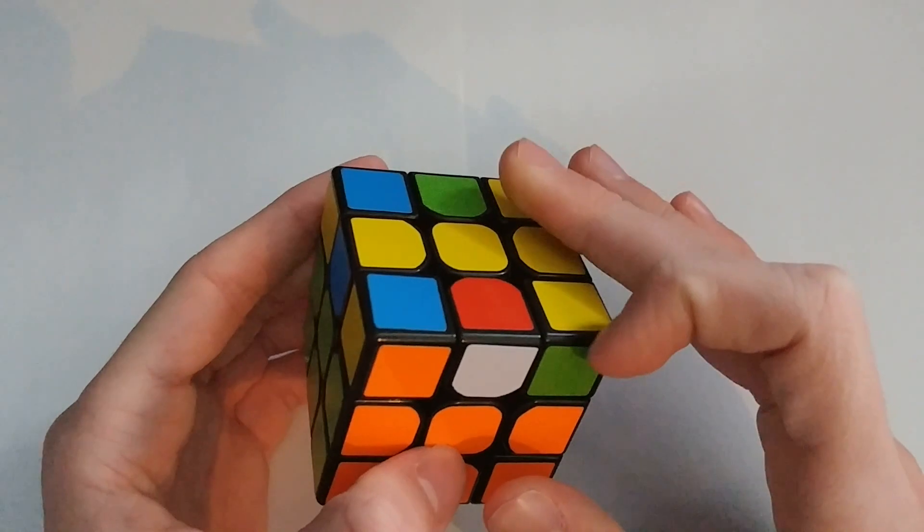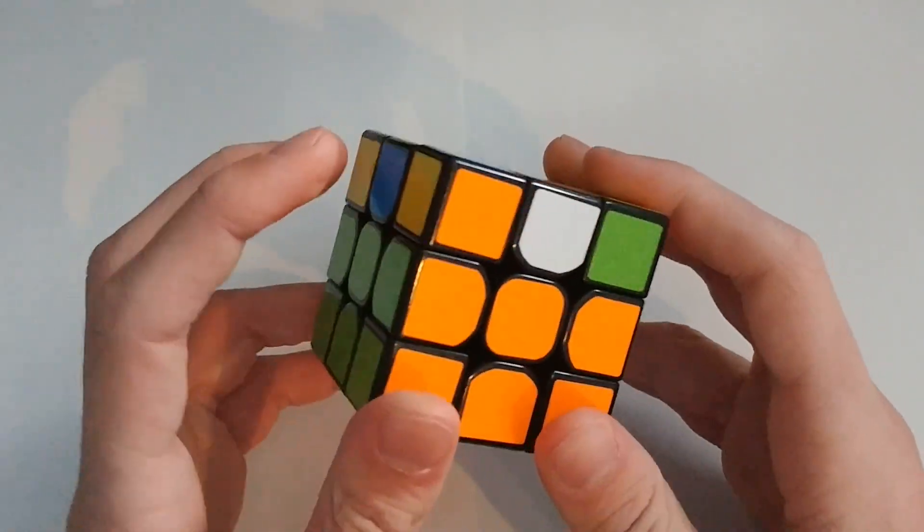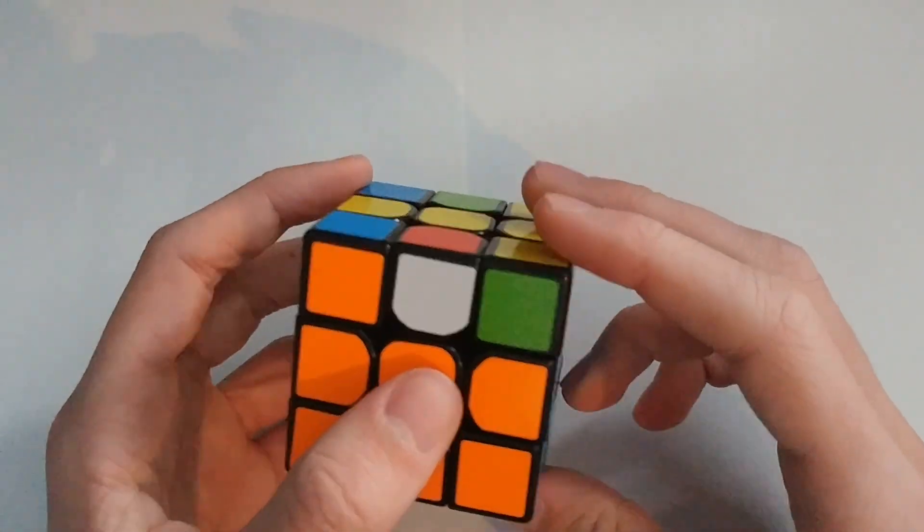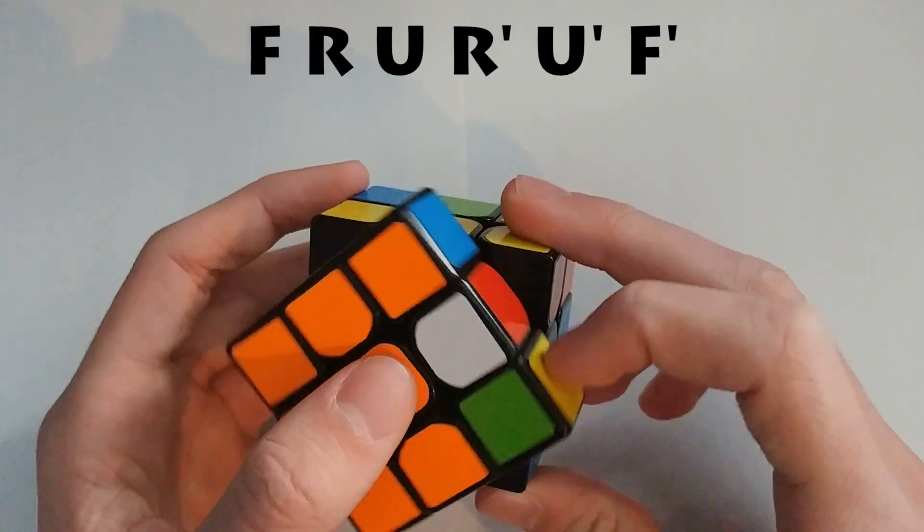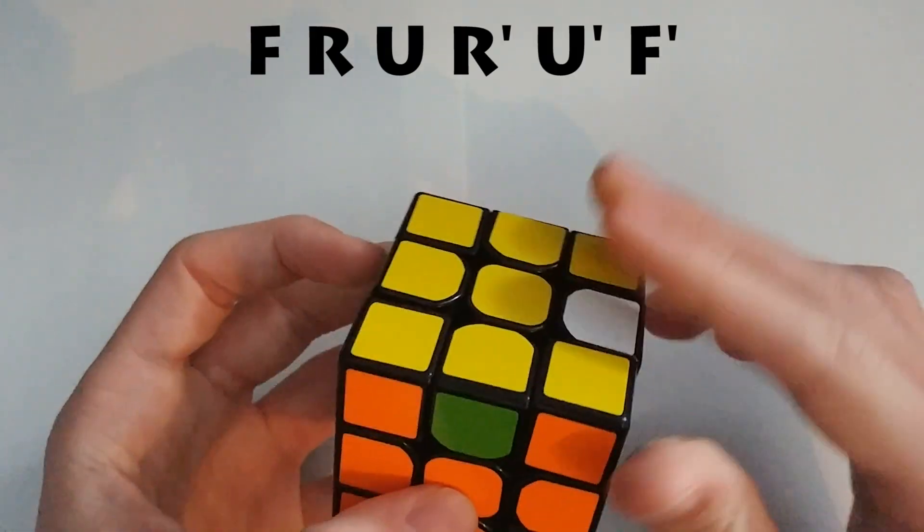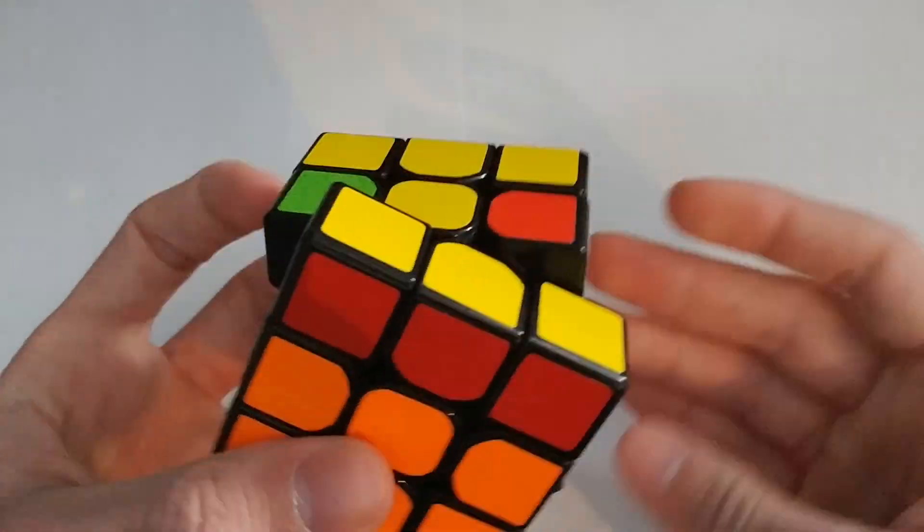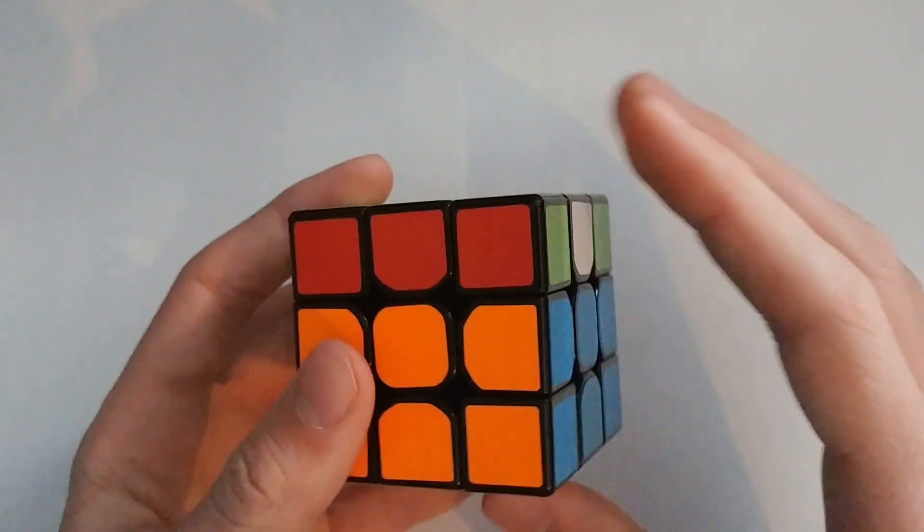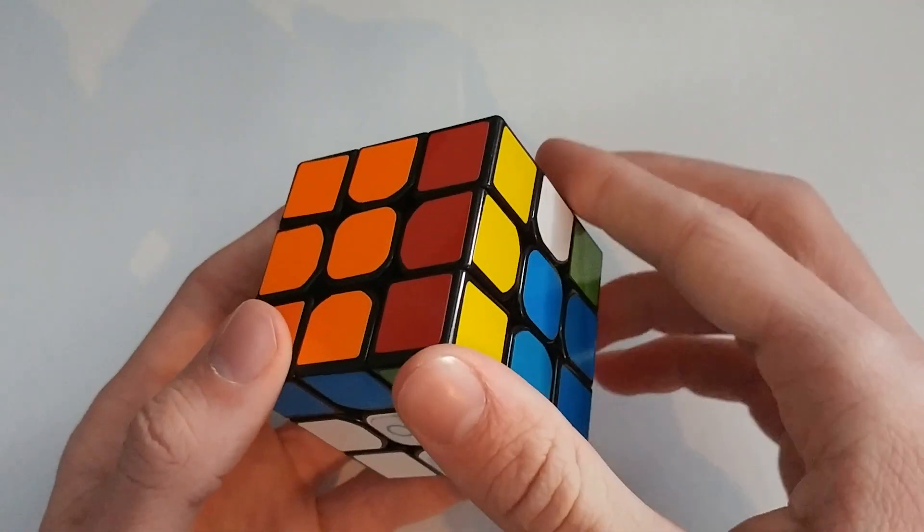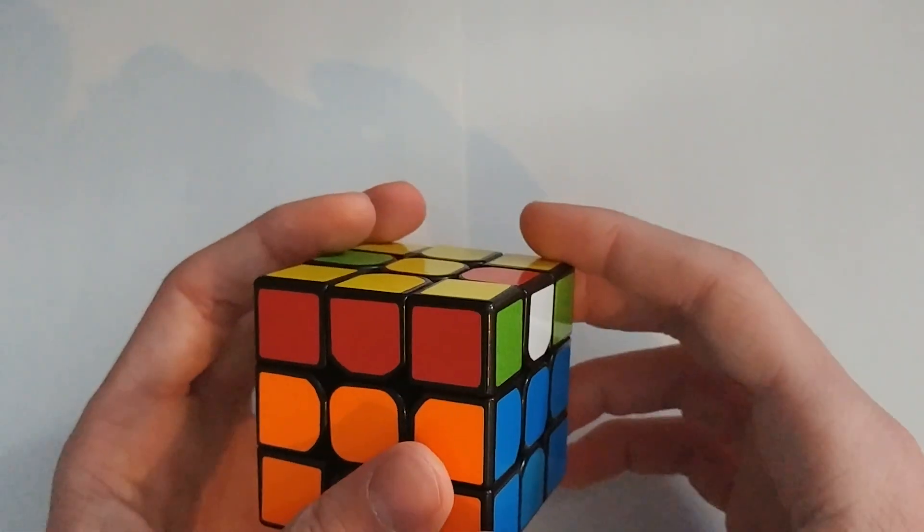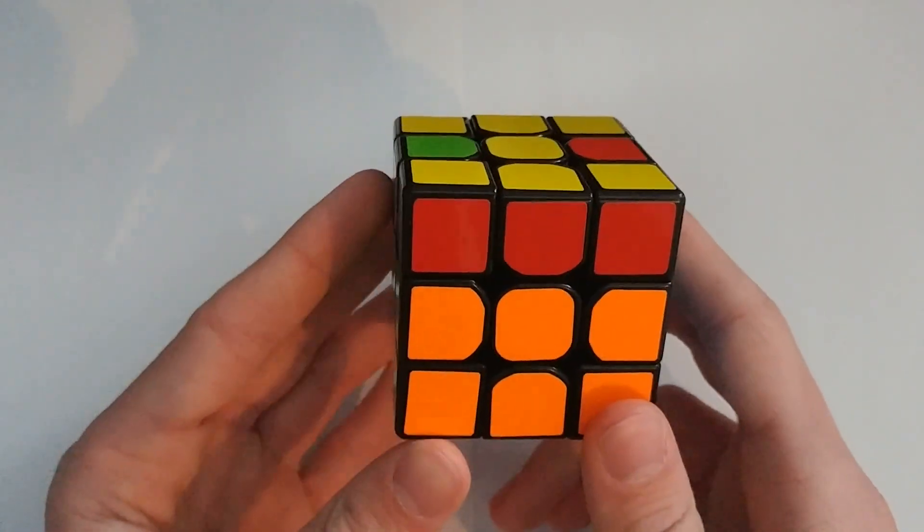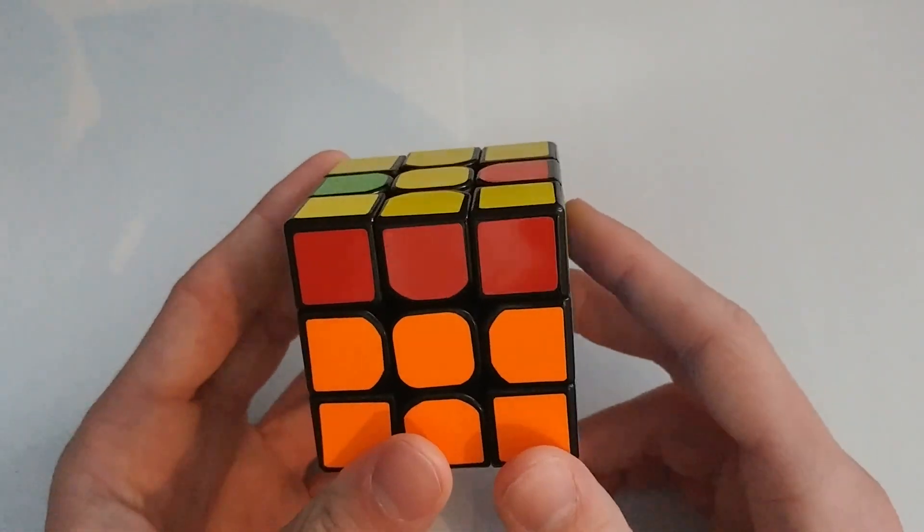In this next case, we have two facing up and two facing out. That one goes just like this. And then fast would be like that. Make sure when you're doing the final F prime, you're taking your thumb and pushing it up like that. A pretty common finger trick, but very important at the same time.